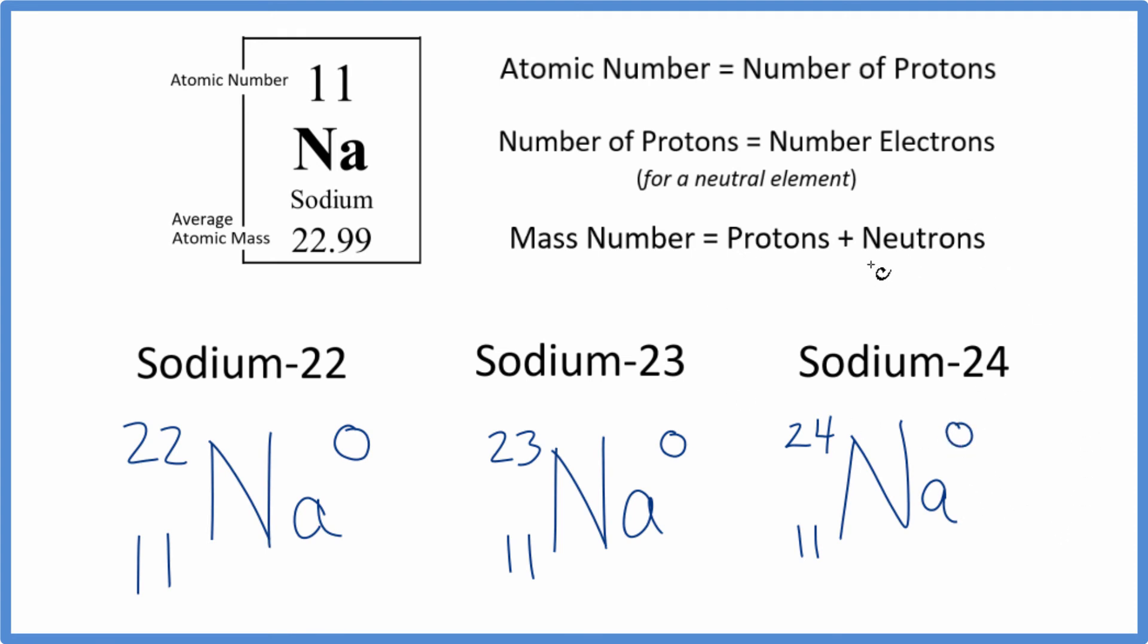We really don't need to write anything about the neutrons, because we can just figure those out. So for sodium 24, we know the mass number is 24. We know it has 11 protons. That's the atomic number. So 13 plus 11, that would give us 24. So the isotope sodium 24 has 13 neutrons. And you could figure that out for both of these as well.